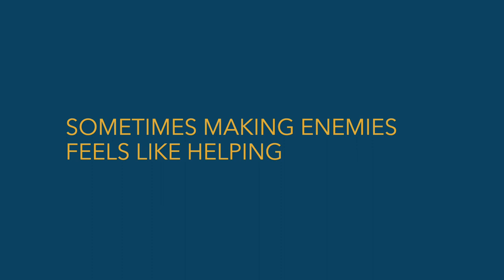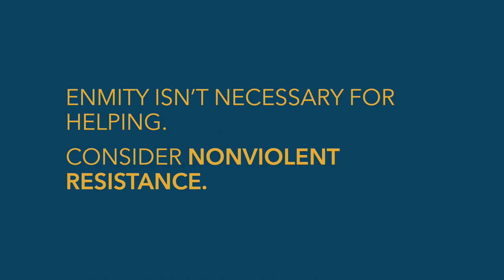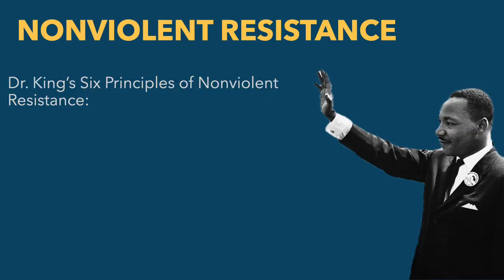Let's talk about an example of a different approach to enemies and enmity in the form of nonviolent resistance. Nonviolent resistance has a pretty long history. Martin Luther King Jr. applied it perhaps most famously in the civil rights movement. He did a great job of articulating six principles of nonviolent resistance that illustrate how you approach a situation where there are people that would consider themselves your enemies or somebody else's enemies.